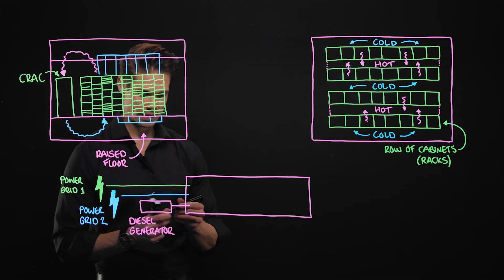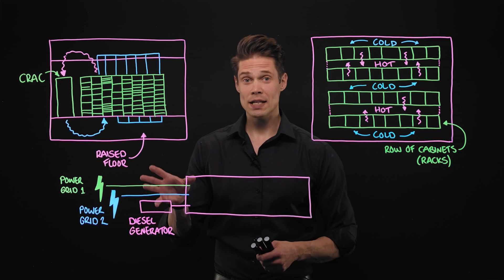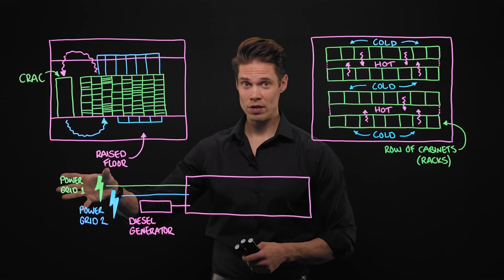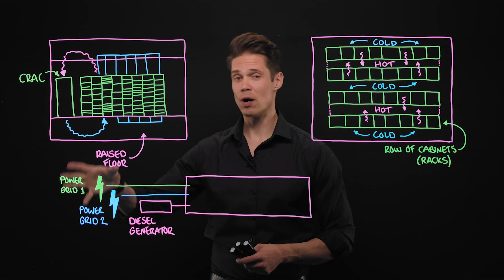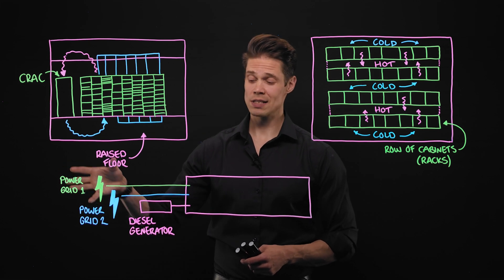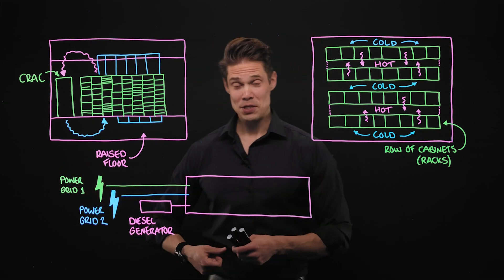A diesel generator totally independent of power grids can start generating electricity immediately when the power is cut from the power grids. So now we are in a pretty good shape already.